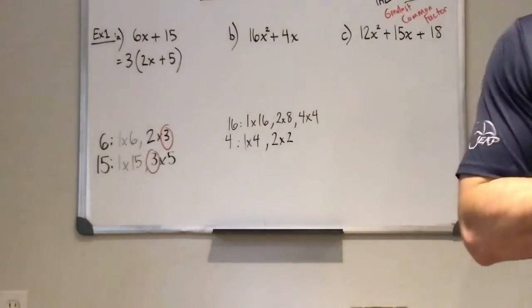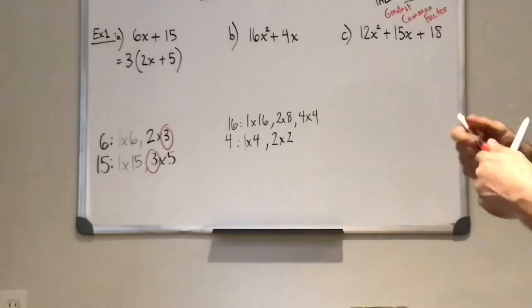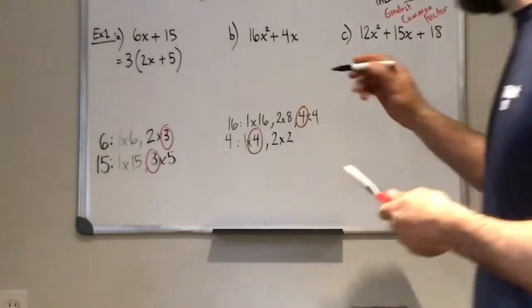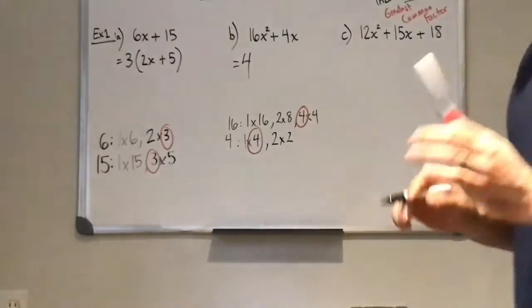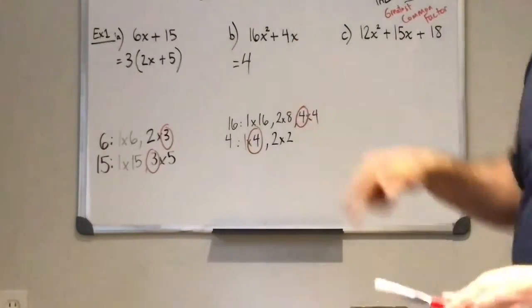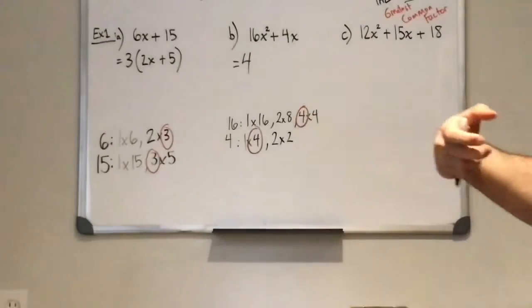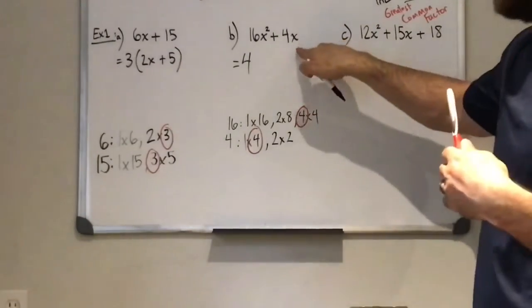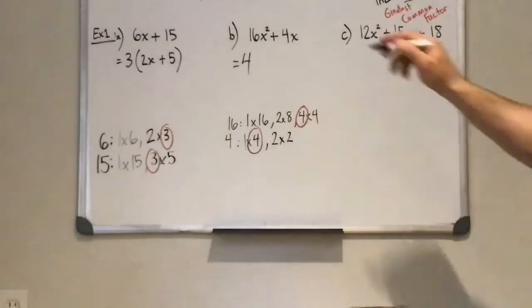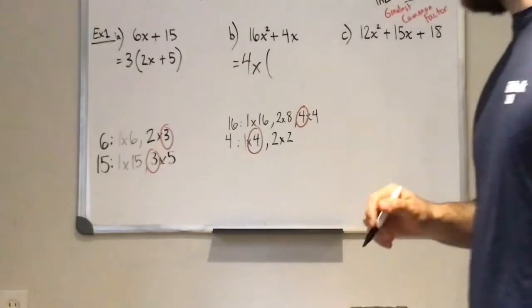Alright, so now if I look at my two lists of factors here, the biggest common number in both lists is 4. Okay, so I know I can take out a 4. There's a little bit more going on in this one, though. So this one, we also have x terms, and x is in both of our terms. Here we only have an x here. We didn't have an x in both terms, so we couldn't take out any x's. Here, the lowest amount of common, lowest number of x's in both terms would be 1. So we can take out 1, and what that's going to leave us with,